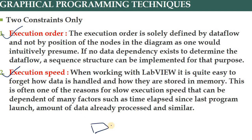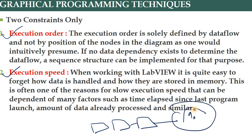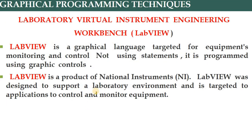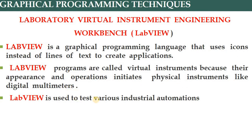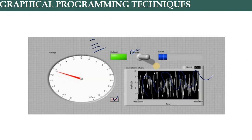There are two constraints: execution order and execution speed. One sub-VI is connected to another; its speed determines how we consider the output. LabVIEW is a graphical programming language used for monitoring and control of equipment. It is programmed using graphic controls. The LabVIEW program itself is called a virtual instrument.